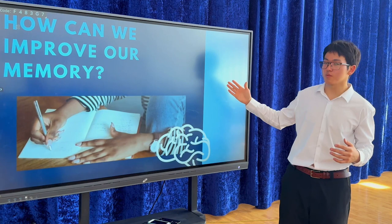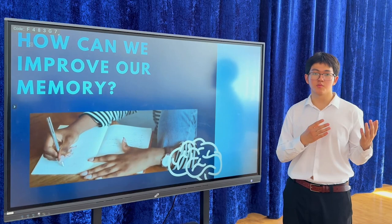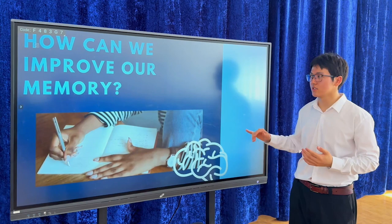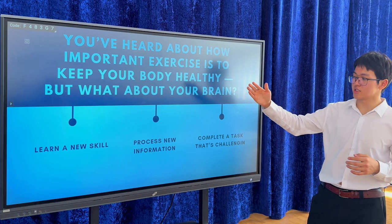How can we improve our memory? We should use mnemonic strategies in order to memorize and remember new things and new words. The best and most important thing is exercising your brain. You should learn a new language. Just as exercise is important to keep your body healthy, learning new skills, processing new information, and completing challenging tasks is important for your brain.